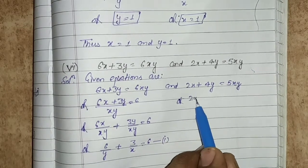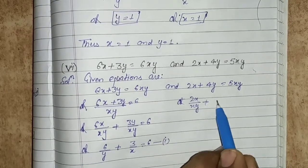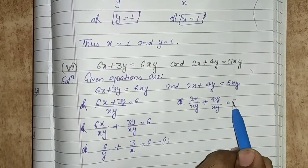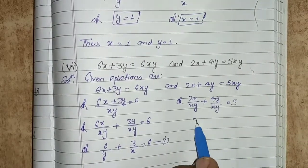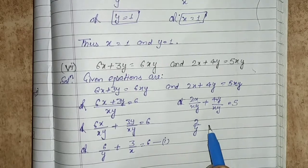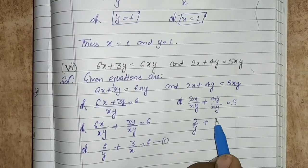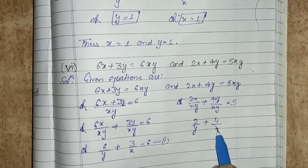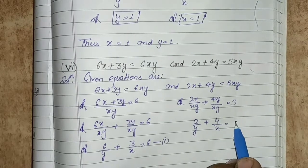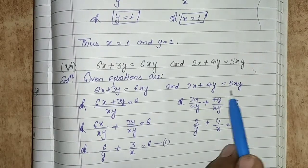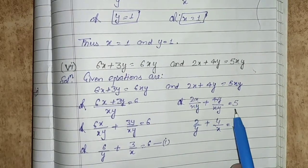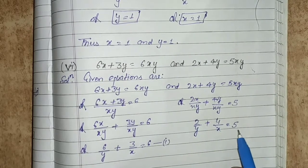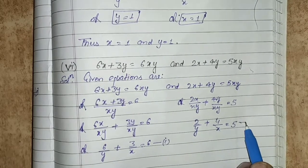Similarly for the second equation: 2x upon xy plus 4y upon xy equals to 5. This gives 2 upon y plus 4 upon x equals to 5. This is equation number 2.